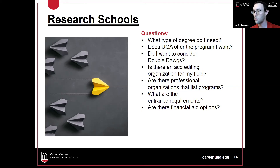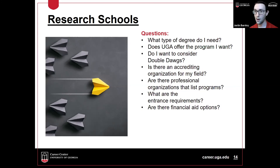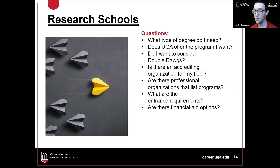When looking into grad programs, find out their entrance requirements — some may require a standardized test and some may not, and they can vary wildly between programs. Also look at financial aid options: do they offer assistantships that let you work for the university while completing your studies? Do they offer out-of-state tuition equalization? Those kinds of considerations can help you narrow down the list of schools you want to apply to.